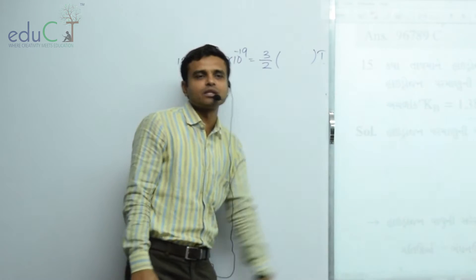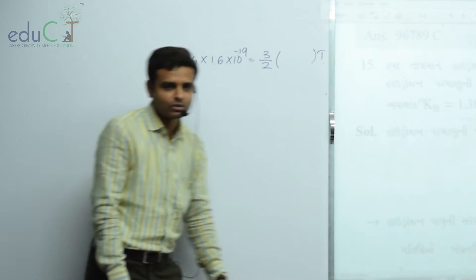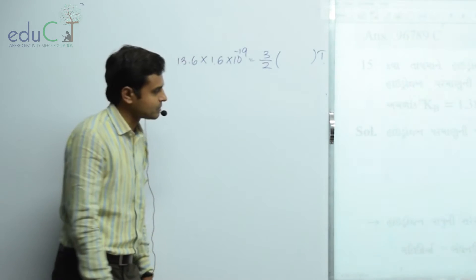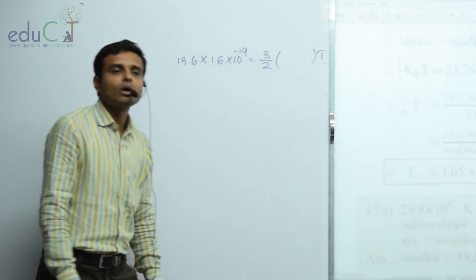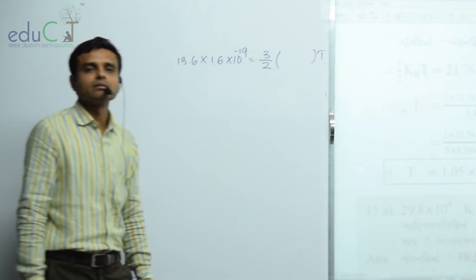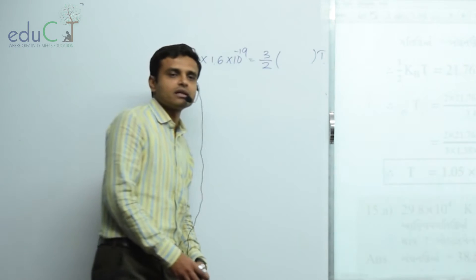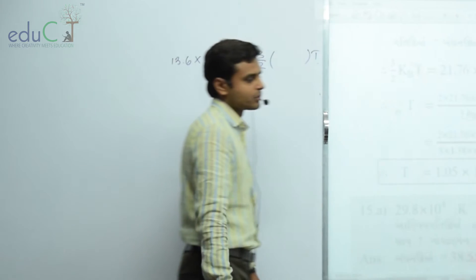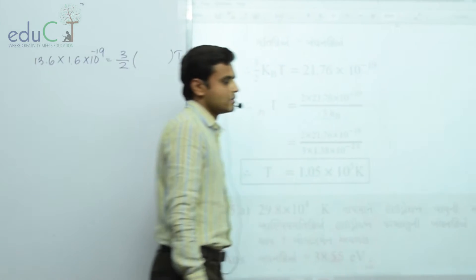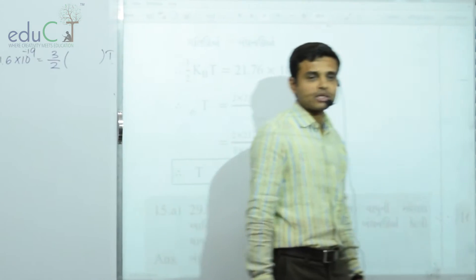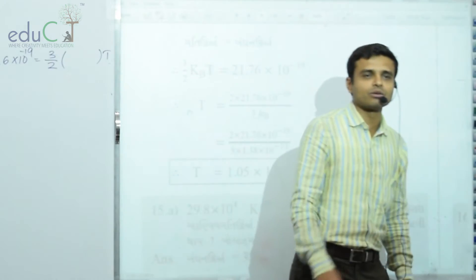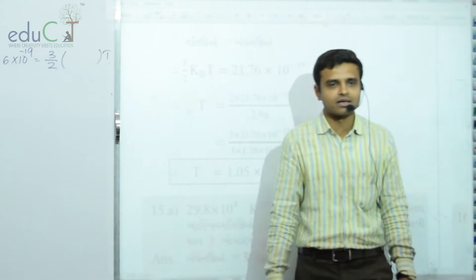Let's take the subject to the temperature. So if we don't have a problem, 3.6 electron volt. But if we don't have a temperature, we don't have a problem.